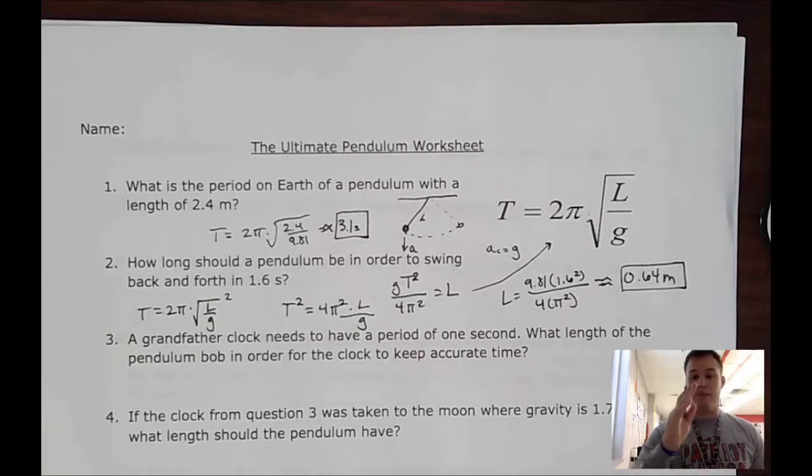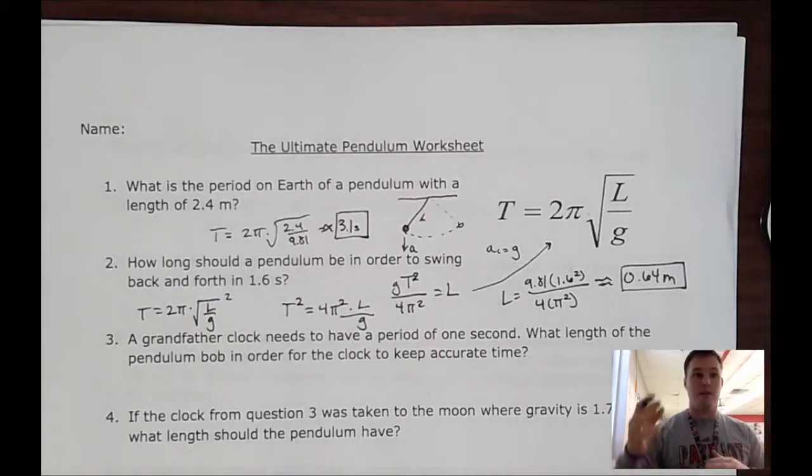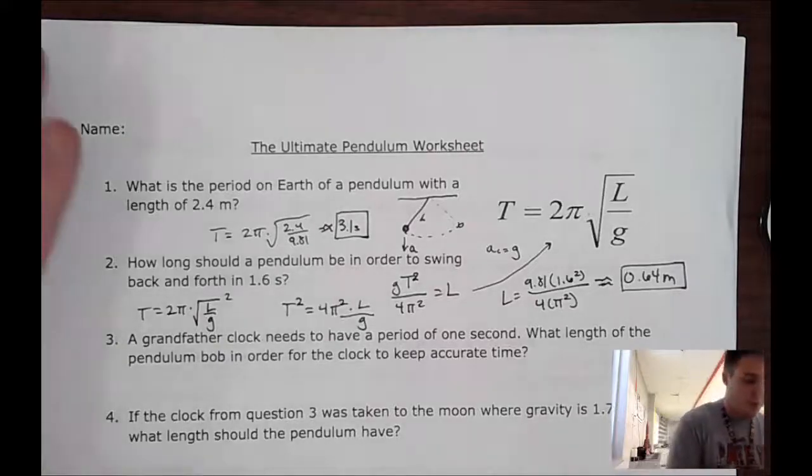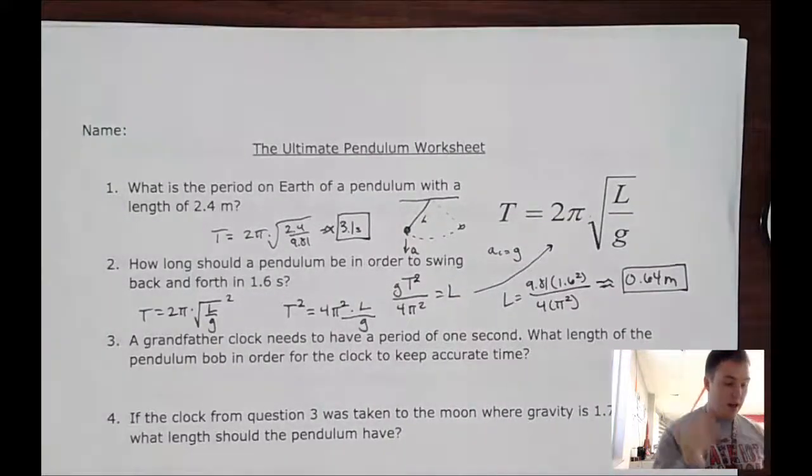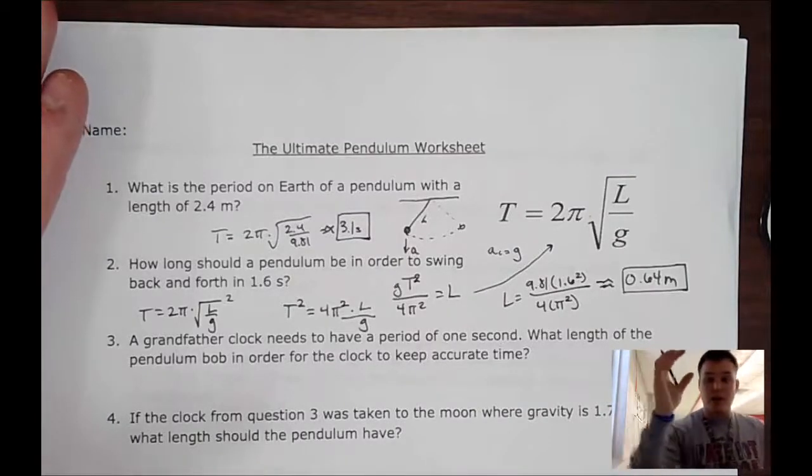And it had a big bob on the bottom of it. It was weighted, and the length of that, they could stretch it out. They could get it to be exactly one second. So this is what we're going to tackle with this problem. So what length does this bob have to be from the pivot point to cause an oscillation of one second? So we're going to use the same equation we derived above.